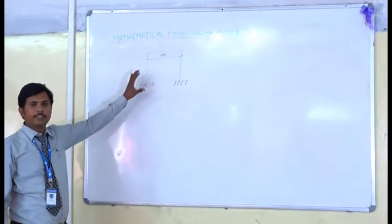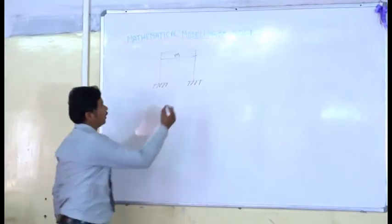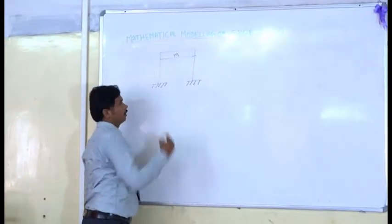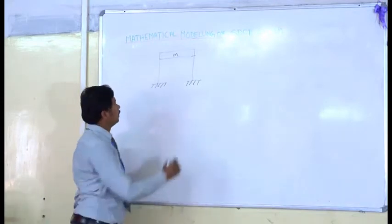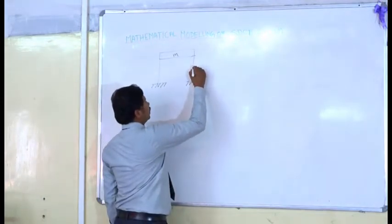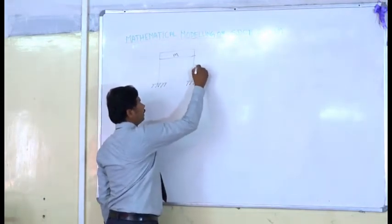So, this is the building frame. This is the foundation. This is the mass. This is the column. This column has stiffness K.